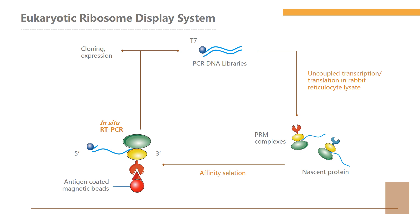The eukaryotic ribosome display system is often used for the selection of antibody fragments using the coupled rabbit reticulocyte lysate, and was initially termed ARM (antibody-ribosome-mRNA) display. The main difference between the E. coli S30 and rabbit reticulocyte ribosome display systems is in the DNA recovery step. The E. coli S30 system uses chemicals such as EDTA for disrupting PRM complexes and releasing mRNA prior to RT-PCR, while the rabbit reticulocyte lysate system employs an in-situ recovery procedure in which DNA is recovered directly on the ribosome complexes by amplification via an in-situ RT-PCR procedure, without dissociation of the ribosome complex.